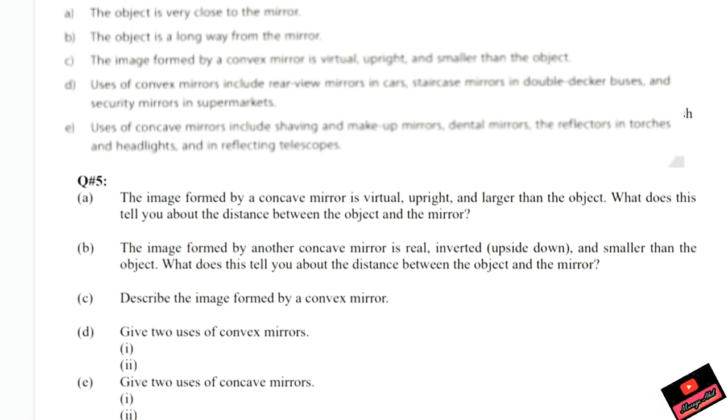Question number five: what is the image formed by a concave mirror? Describe the image formed by a convex mirror. What are two uses of convex mirror? The answers are written at the top. When the object is very close to the mirror, the image formed by another concave mirror is real and inverted when the object is far away from the mirror. The image formed by a convex mirror is virtual, upright, and smaller than the object. What are the uses of convex mirror? They are used in staircase mirrors and double-decker buses. What are the uses of concave mirror? They're used in headlights and reflecting telescopes.